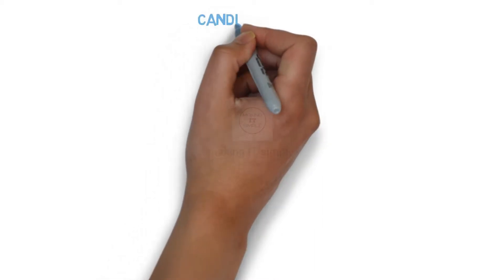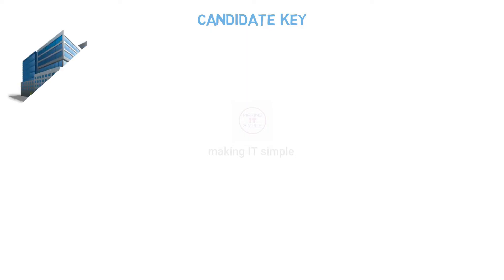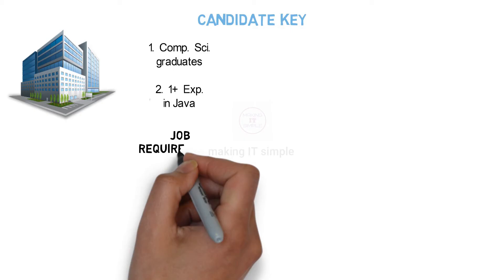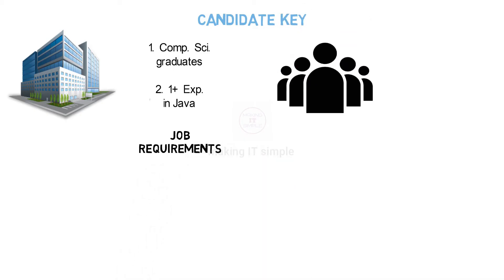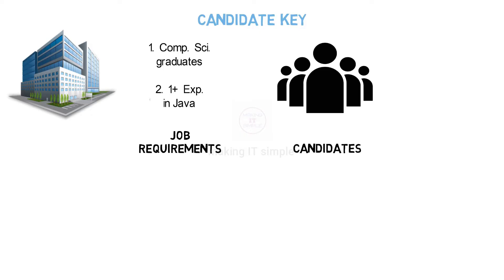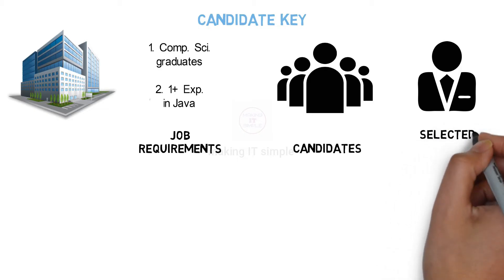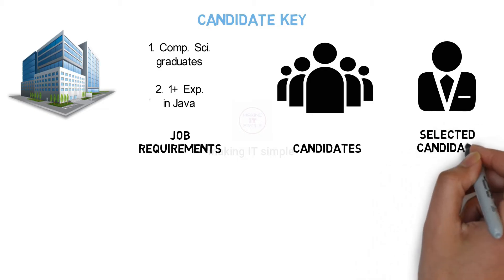Hello everyone. This video is about candidate key in DBMS. Let us consider a real life example: there is a vacancy for a post in a software development company, for one employee only. There are few job requirements for the post. Many candidates will fulfill the job requirements and be present for the interview. They all fulfill the requirements, but the best one will be chosen for the post and assigned the job.